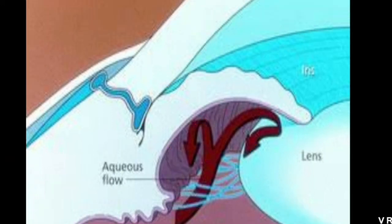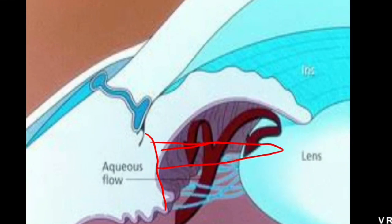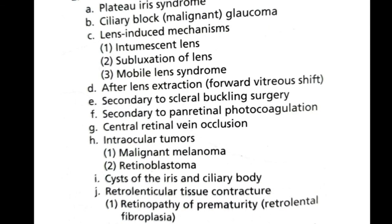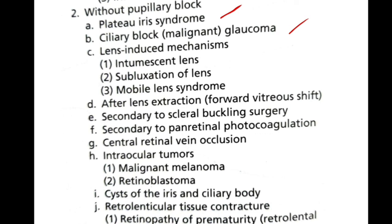Without pupillary block, the iris insertion itself can be abnormal — inserting too high, occupying the region of the trabecular meshwork and causing blockage of trabecular outflow. Pupillary block causes include pupillary block glaucoma, lens-induced mechanisms, and posterior synechiae. Without pupillary block, causes include plateau iris syndrome, malignant glaucoma, and lens-induced mechanisms. Each of these topics will be explained in detail in subsequent videos. This is how glaucoma is classified based on mechanism of outflow obstruction.